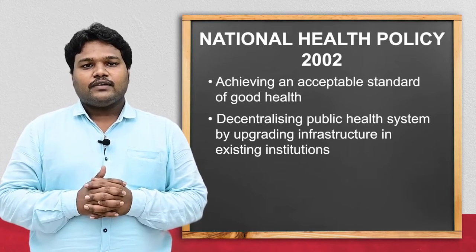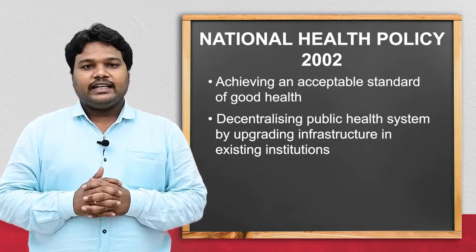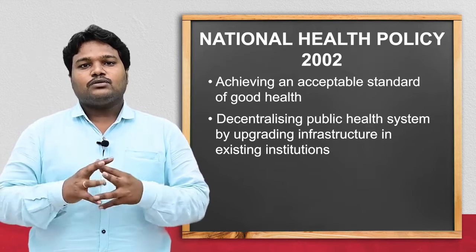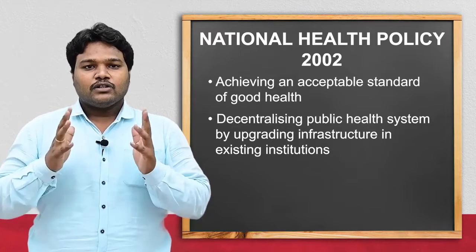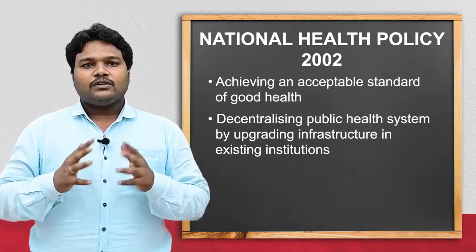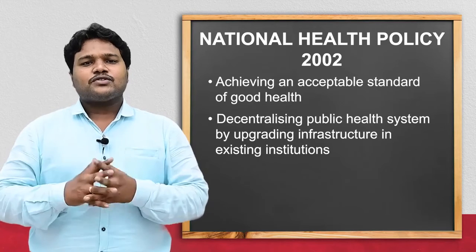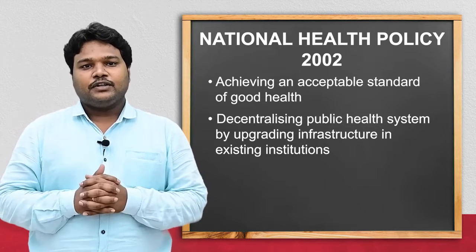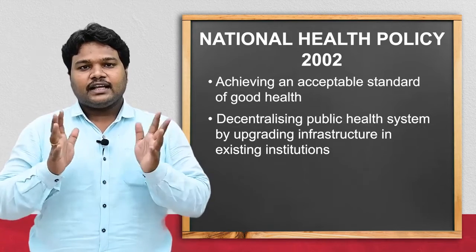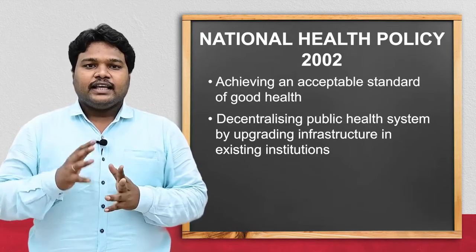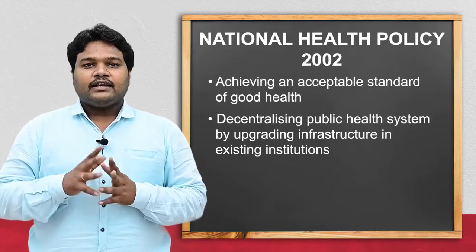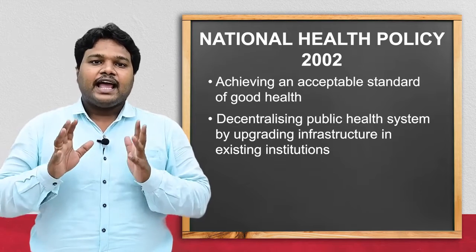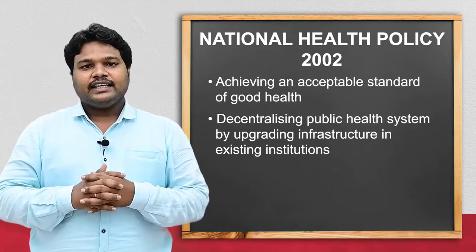Why was national health policy 2002 evolved? Because the goal set in 1983 — health for all by 2000 AD — was not achieved. The first objective of national health policy 2002 is that health care should be made accessible with equitable distribution. The second objective is that health care should be improved — meaning whatever health facilities currently exist, we have to add more, that is, adding more infrastructure to existing institutes.